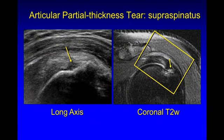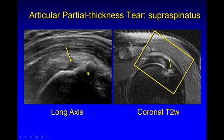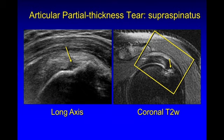Here's an example of an articular-sided partial thickness tear of the supraspinatus. We have a well-defined defect touching the hyaline cartilage over the humeral head. It's not touching the bursal surface, therefore excluding a full thickness tear. Note that the MRI is essentially a mirror image of the ultrasound — normal tendon on ultrasound is bright, while on MRI the normal tendon is dark. The abnormality or tear is dark on ultrasound and bright on MRI. The bone cortex is bright on ultrasound and dark on MRI — same anatomy, although higher resolution with the ultrasound.